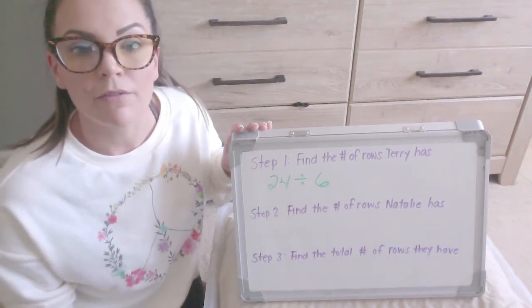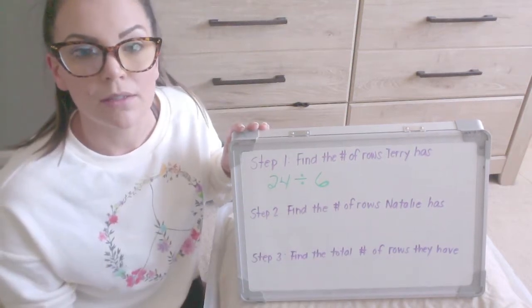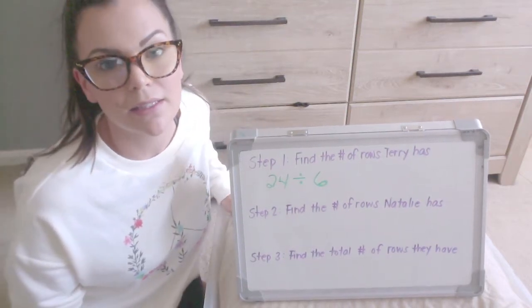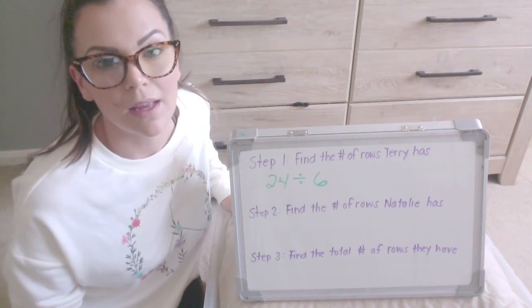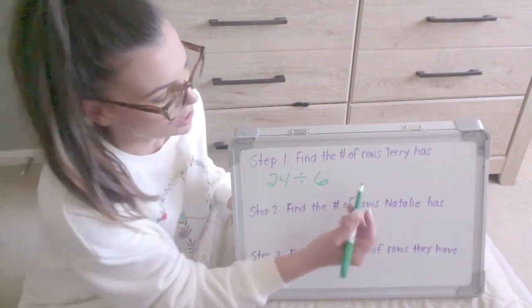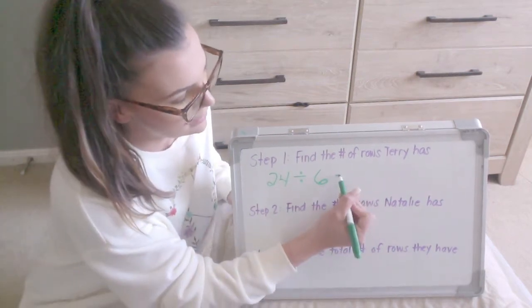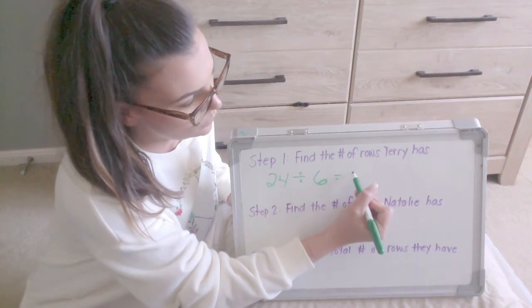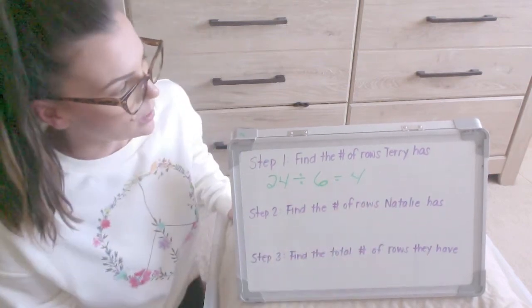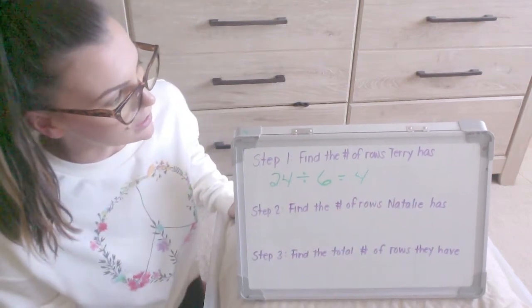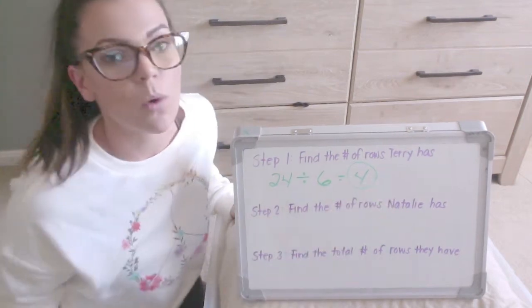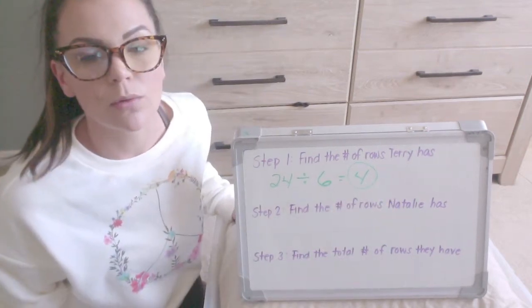So I'm taking my 24 cars and dividing them into rows of six. 24 divided by six — can you guess it? It's four. So how many rows does Terry have? Terry has four rows.